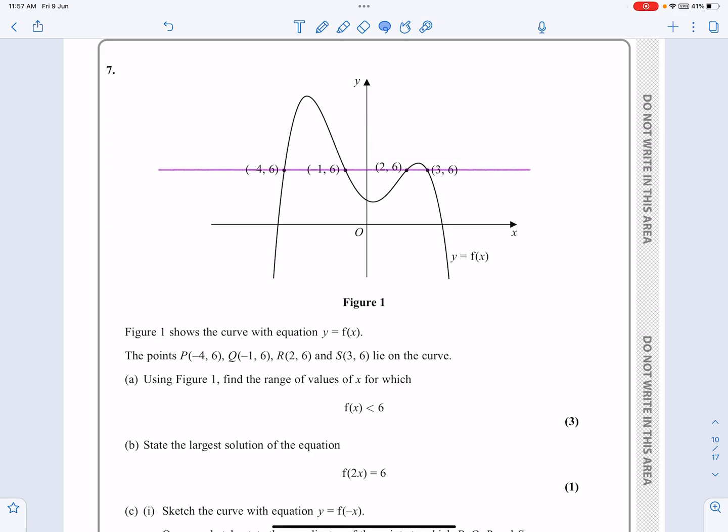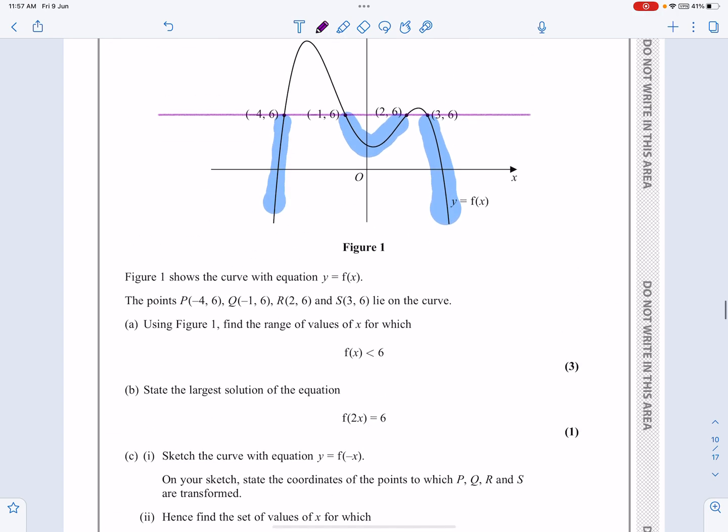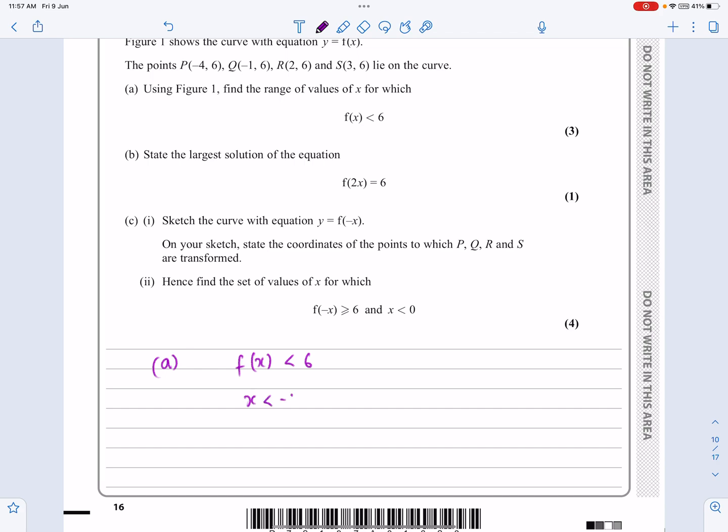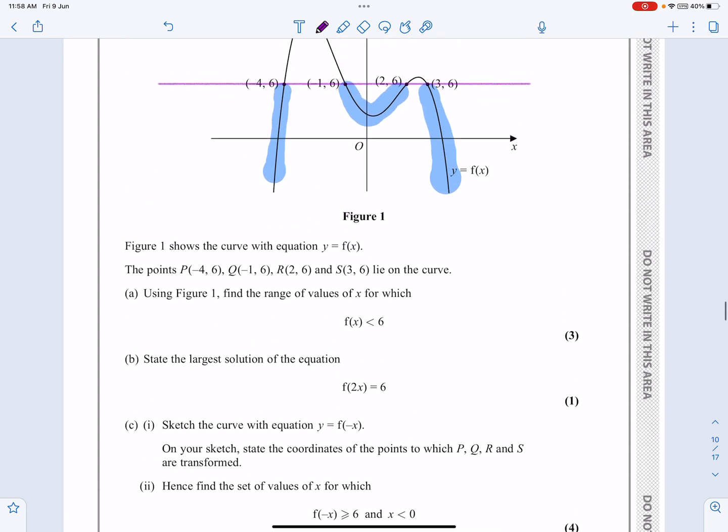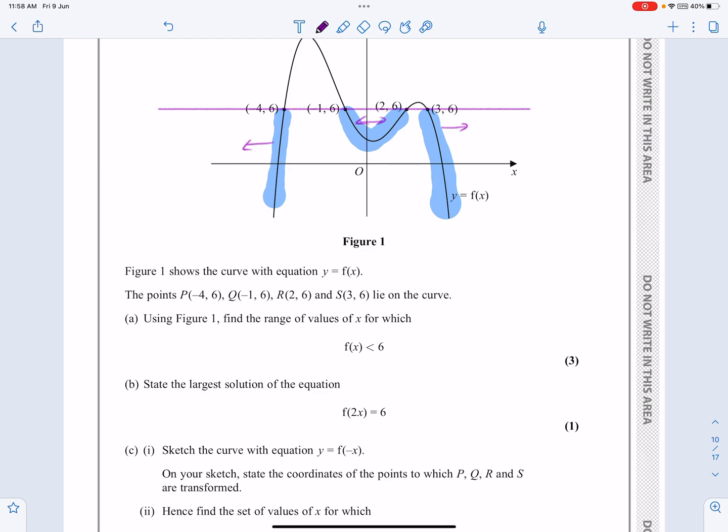What we're interested in is when is the function less than 6. So it's less than 6 there, and it's less than 6 there, and it's less than 6 there. So if I've got those bits then, my answer to part A, if f(x) is less than 6, then x is going to be less than minus 4, it's going to be between 1 and 2, and it's going to be greater than 3. Just have a look there again, less than minus 4, between 1 and 2, and greater than 3. Yep, so I'm happy with that for part A.